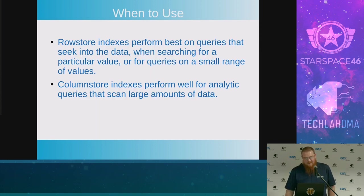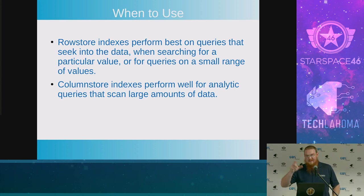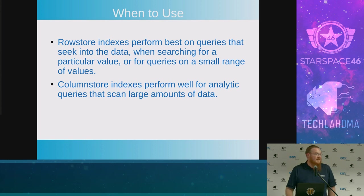When you'd want to use each type: for a row store, the best time to use it is when you're looking for a single row or a small selection of rows. With column store, since if you're running an average or sum on a single column, that's the time you want to use it — when most of your queries look like that.